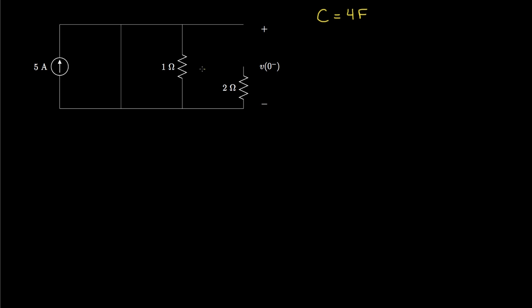We'll see the short where the switch is, and we'll open up this capacitor. Now what we should be able to do is take a look at this voltage. With this short in place, all of the current from the 5-amp current source is going to flow through this short. None of that current will flow through the 1-ohm resistor, and because of the short and the open, no current will flow through the 2-ohm resistor. So we'll have no voltage across either of these resistors. So the desired voltage V, just before we open that switch, will be equal to 0 volts.